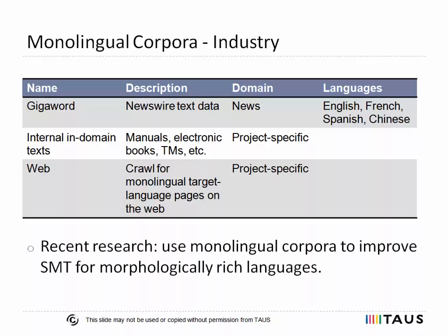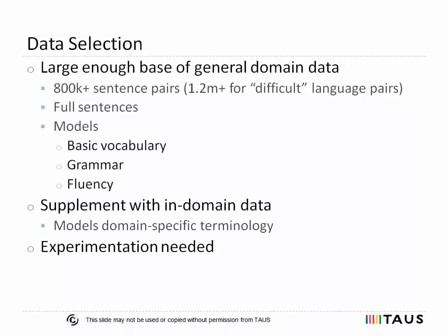Monolingual corpus is much cheaper and easier to obtain than parallel data. The GigaWord corpus is a good example of a huge monolingual corpus which can be used to improve statistical MT systems. GigaWord is available in some major languages and is a collection of newswire texts acquired over several years. The most easy-to-get sources of monolingual data are in-domain texts and documents in the target language, which can optionally be crawled from the web. Recent research also shows that target-side monolingual data can extend the vocabulary of the translation model in SMT engines, improving the decoder's ability to produce grammatically correct translations into morphologically richer languages.